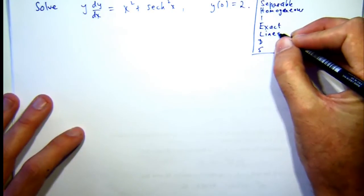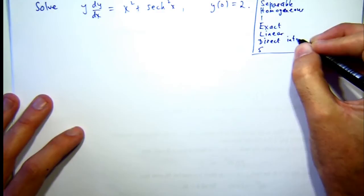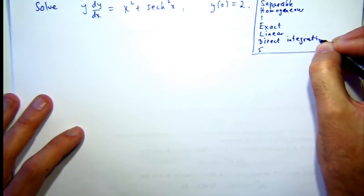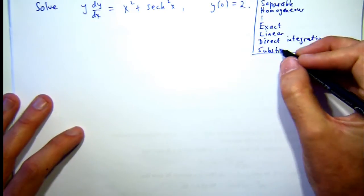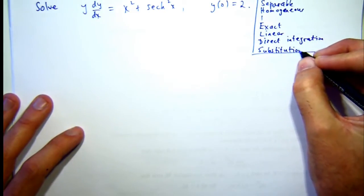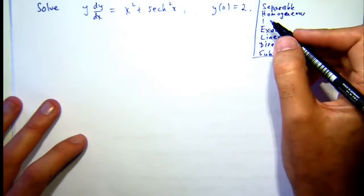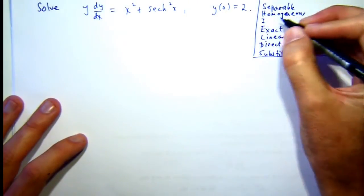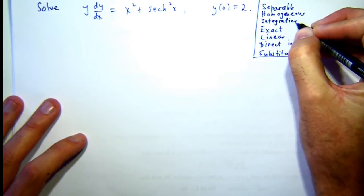So L stands for linear, you can solve something sometimes via direct integration. And the S down the bottom, well, I've already used separable. Sometimes you can solve ODEs by substitution. Now, the I stands for integrating factor.